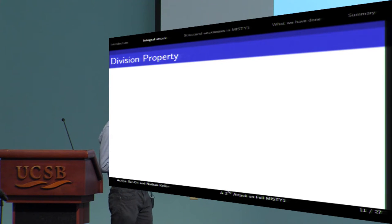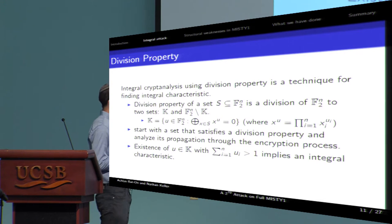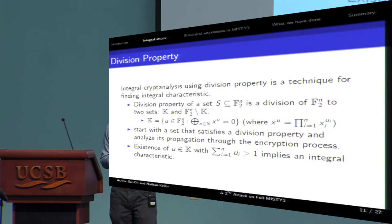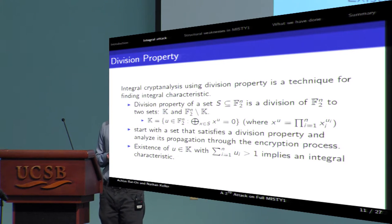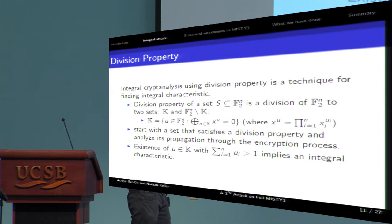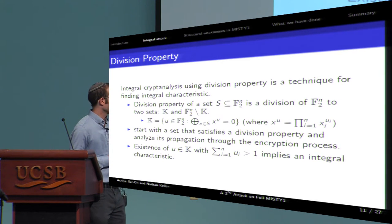Here, Todo came up with a nice technique that uses what is called division property. A division property of a set S is a partition of the space, in our case F2 to the power of n, to two groups. One is all the u's such that the sum of X to the power of u over all X in S equals zero. And the other set is all the other u's. Now start with a set of plaintexts that satisfy the division property, and check how the division property changes through the encryption process.